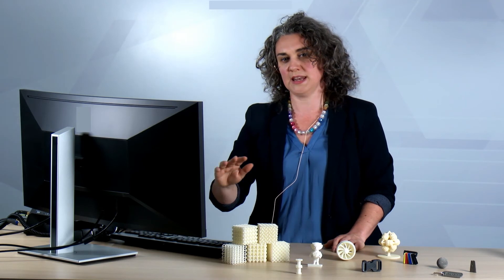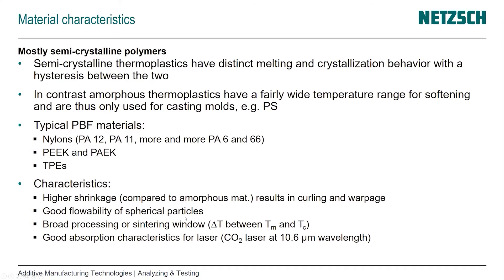We need good flowability of the particles - spherical particles specifically - to get a uniform, even coat without little holes inside our new layer that would create pores and voids in the parts. We want materials with broad processing and sintering windows.